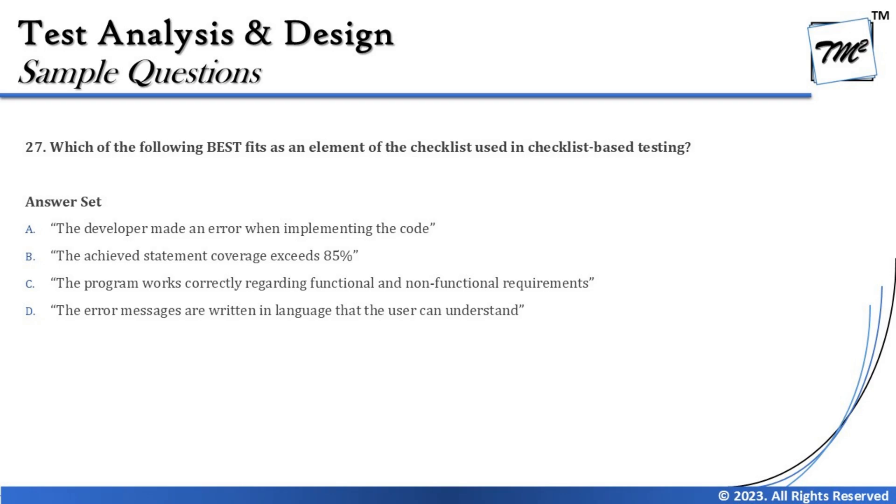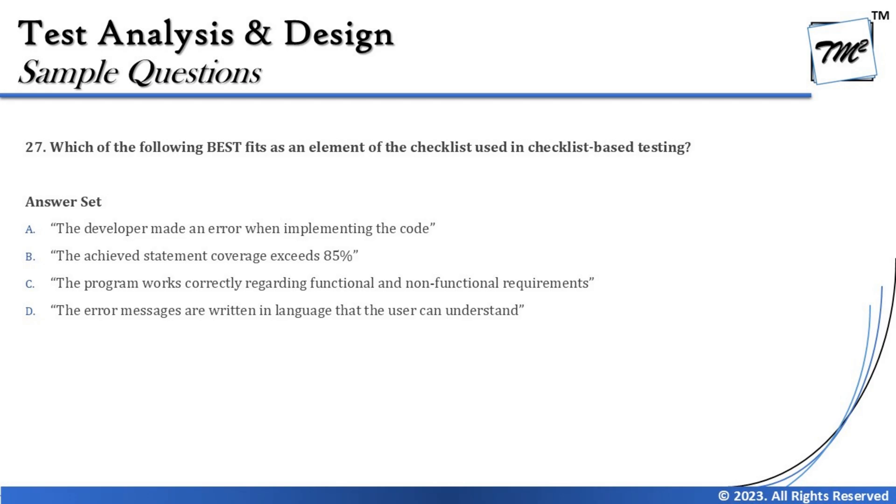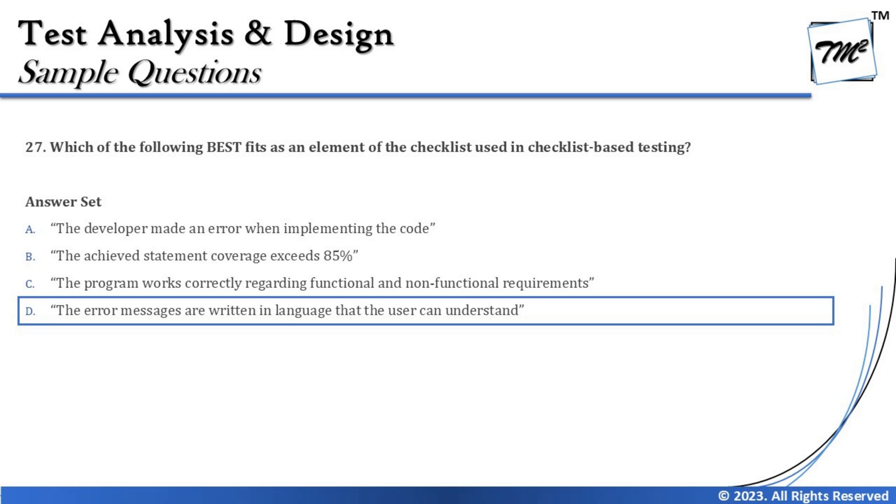Option D says: the error messages are written in a language that the user can understand. That's an example of measuring a concrete element of the application — we are checking whether error messages are readable and understandable by the end user. So the right answer for question 27 is D. The point being made is: sometimes we understand checklist-based testing but get confused by the options, so be patient when concluding your answer.